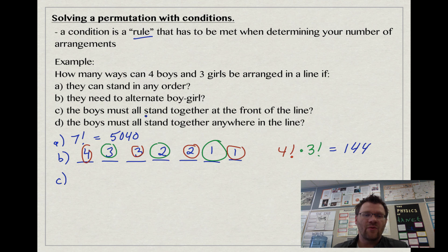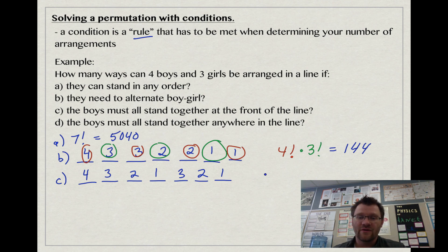Part C: if all the boys must stand together at the front of the line, we have seven blanks again. This has to be a boy, this has to be a boy, this has to be a boy, and this has to be a boy. We still have 4, 3, 2, 1 because any four of the boys could stand here, then three boys, then two, then one. The girls have to be at the end of the line: 3, 2, 1. Again that's 4 factorial times 3 factorial, which is 144.